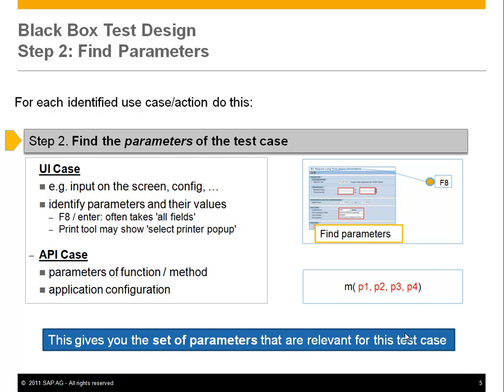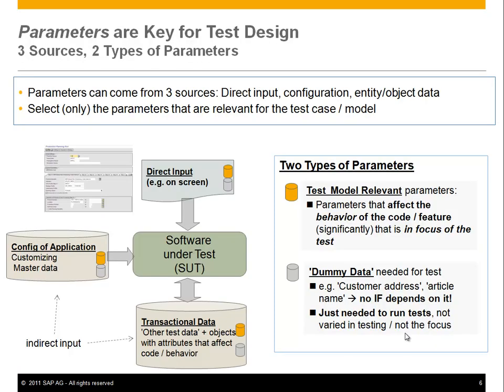So first we found the test cases derived from user actions, and now we've found parameters for each test case. Parameters are key for test design because we have to consider three sources of parameters and two types. If you look at the graphic, in the middle is the software under test. The direct input is what you provide — for instance what you see on the screen. Then there is configuration, like customizing and master data, which affects the behavior of the software. And finally there is transactional data, such as a materials catalog or any kind of objects that the software works on.